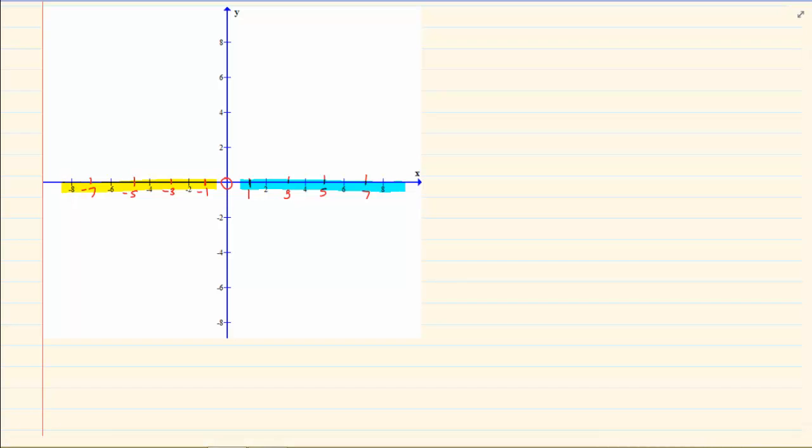And then for the y axis - remember this is your x axis that we have just discussed. Now for your y axis, when we are going on top, we are doing positive. So we have 1, 2, 3, 4, 5, 6, 7, 8.